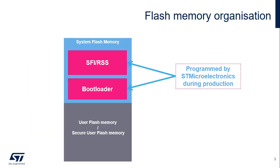The flash memory has an information block containing system memory from which the CPU1, or Cortex-M4, boots in system memory boot mode. This area is reserved and contains the bootloader used to reprogram the flash memory through one of the following interfaces: USART1, I2C1, or SPI. It is programmed by STMicroelectronics when the device is manufactured and protected against spurious write-erase operations.